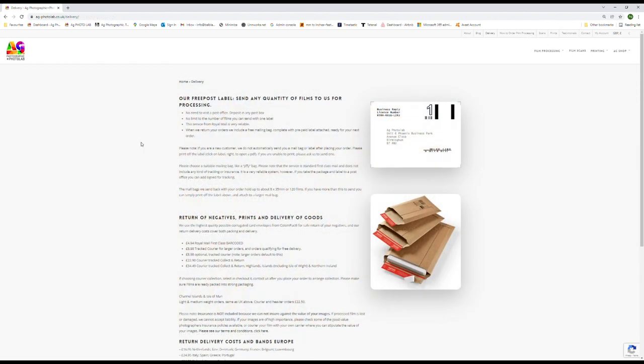We also have a very reliable Royal Mail business reply service, which will allow you to send your film to us free post from any post box. You do not need to enter a post office in order to get your films to us. Simply click and open this label as a PDF, print it off and attach it to your mailbag. When we return your film, we will send you a free mailbag with label attached for any future orders.